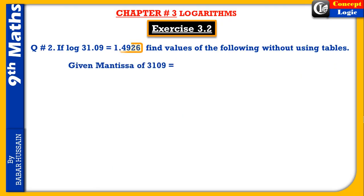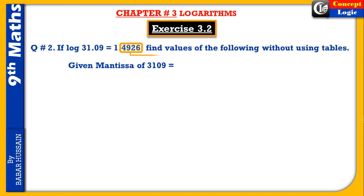Question number two: if log 31.09 is equal to 1.4926, find the value of the following without using tables. Mantissa کیا ہوتا ہے — fractional part ہوتا ہے. That is, four nine two six — 31 کو table میں دیکھیں تو zero اور nine کا difference دیکھیں تو four nine two six آتا ہے. اس نے کہا table use نہیں کرنا۔